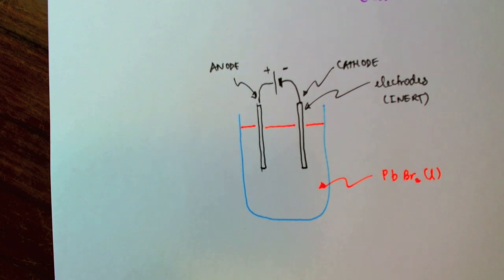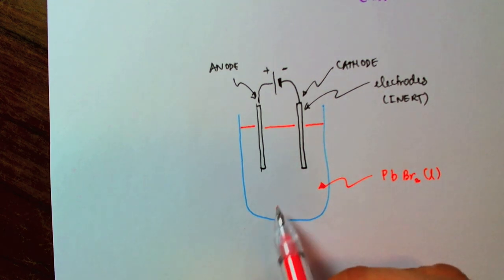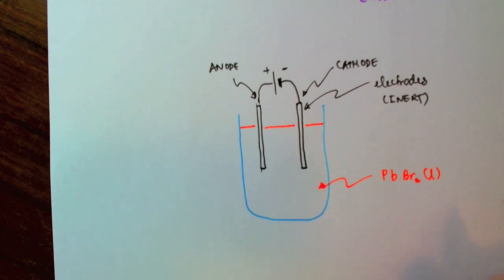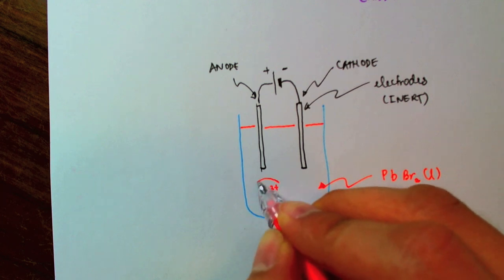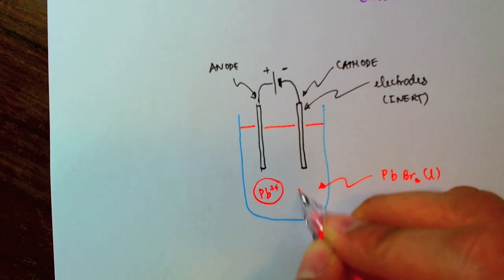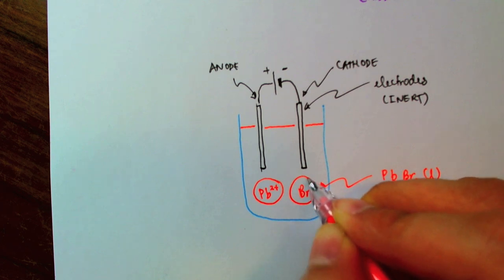I basically take a block of lead bromide and heat it up so much that it melts. So, to be clear, the lead bromide is not mixed in with water of any sort. It's just pure lead bromide in there. So, if I have lead bromide in a molten state, what do I have in the solution right here? I'm going to have lead ions and bromine ions.